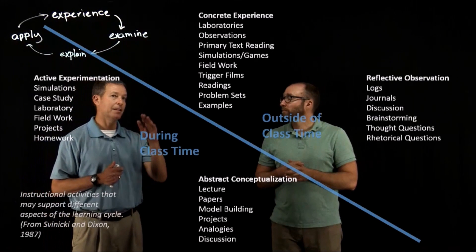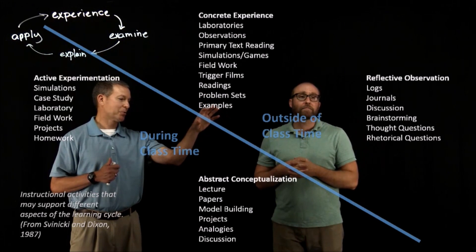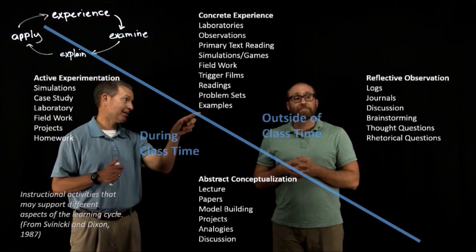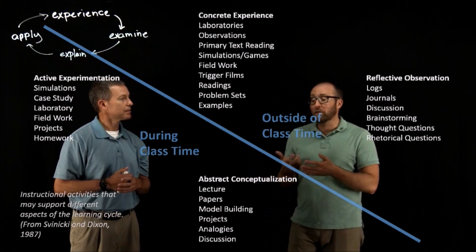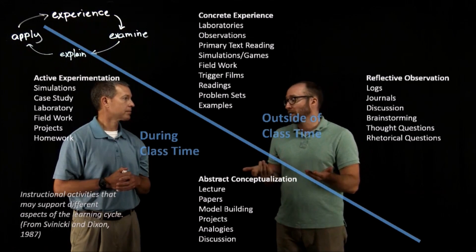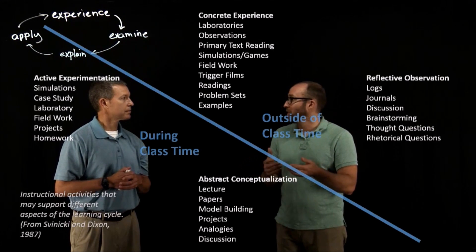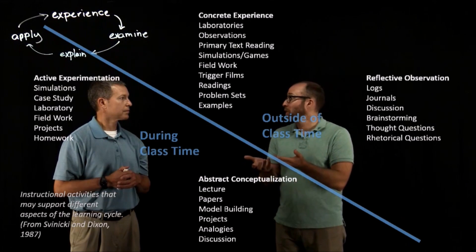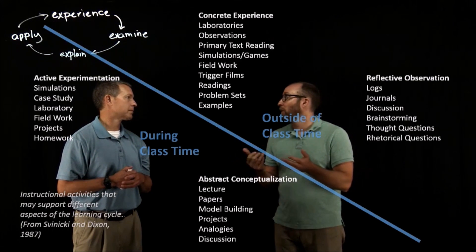Having the experience and reflection happen outside of class might also help you bring in examples from those first two phases of the learning cycle instead of always referring to the textbook. If a student articulates something in their reflective writing, that gives me a few ways to personalize things. Instead of cold-calling someone, I can say, 'Hey, you wrote about this, or this was something you noticed in the experience you had — let's tie that into what the readings say.' It's an easy way to keep things more involved and engaged.